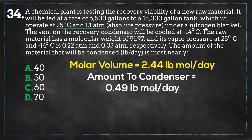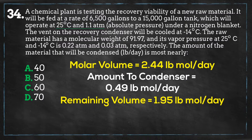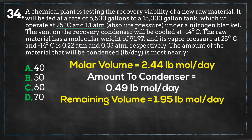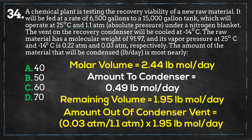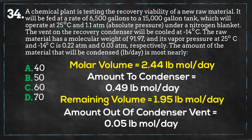Since 0.49 moles of the material has condensed, we have a balance of 1.95 pound-moles of material remaining to investigate. Now let's focus on the amount of material that will exit in the condenser vent. At minus 14 degrees Celsius, the vapor pressure of the material is 0.03 atmospheres, so we take a ratio of the vapor pressure and the tank's absolute pressure, then multiply it by the remaining volume in the tank, and we get about 0.05 pound-moles of material that has left the condenser through the vent.